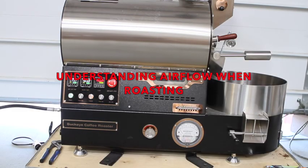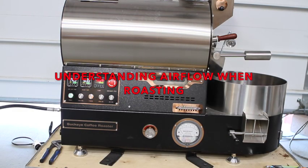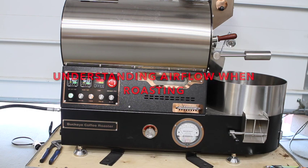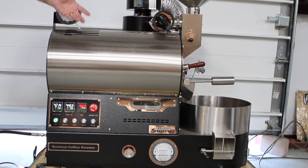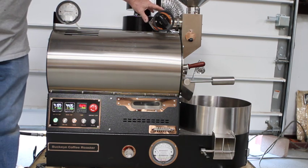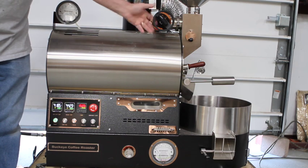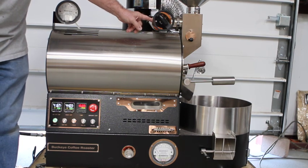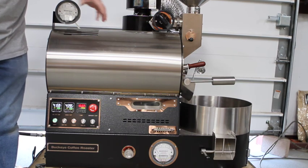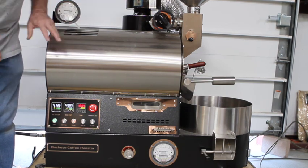This video is to help you get a better understanding of airflow on a roaster, a BC 3.5 and 5 from 2022 and up. The entire way to control airflow is through the manual dial damper which runs from 0 to 10. Obviously the lower numbers allow less airflow to go through the drum, the higher numbers allow more.